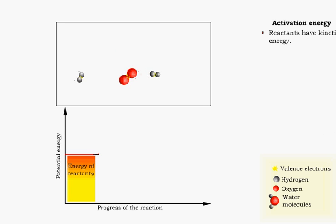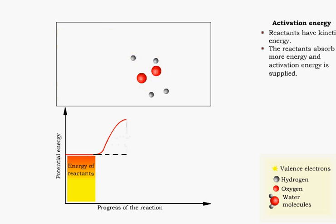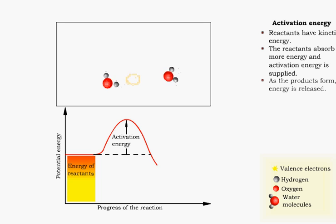Reactants, like hydrogen and oxygen, have their own kinetic energy, the energy that keeps them in motion. When the reactants absorb more energy from their surroundings, the activation energy needed to break bonds is supplied. Energy is released as the products form.